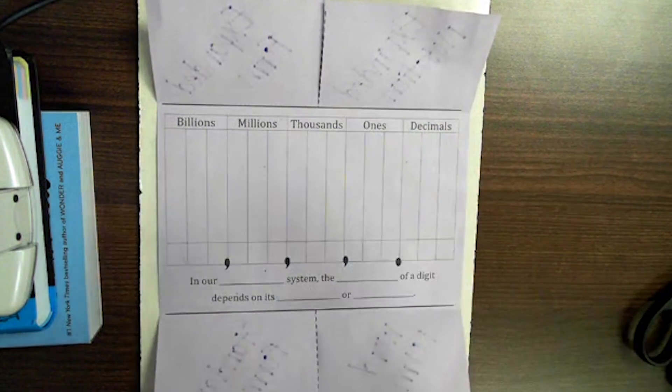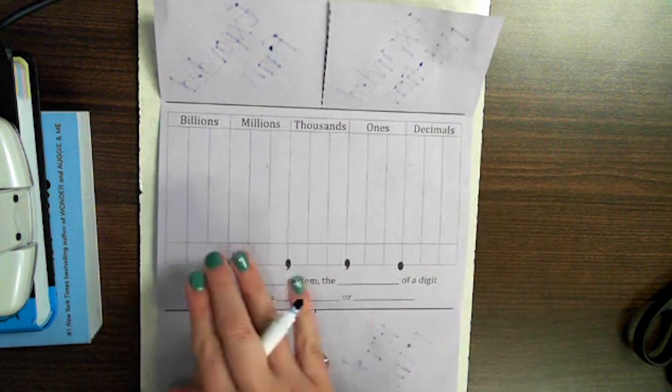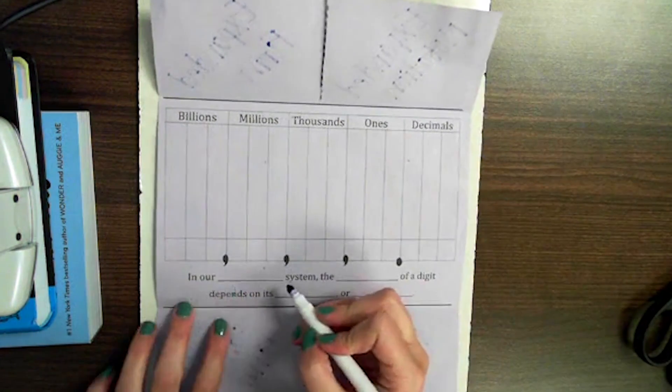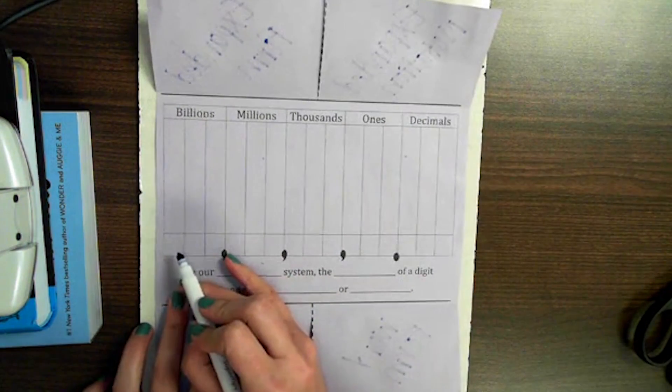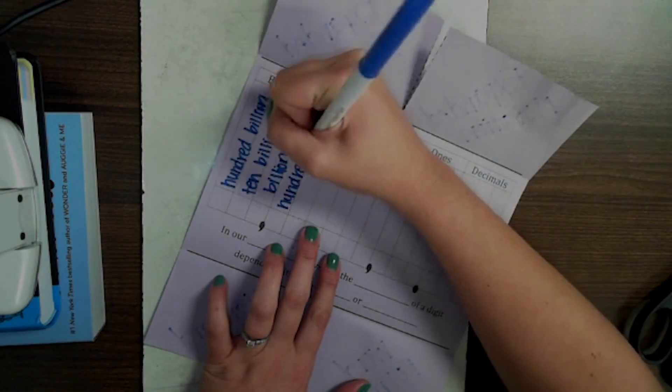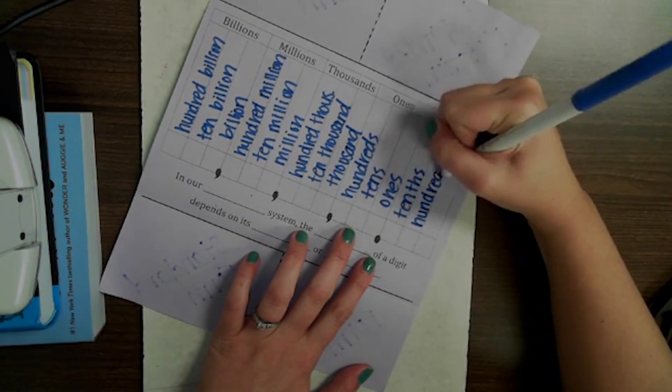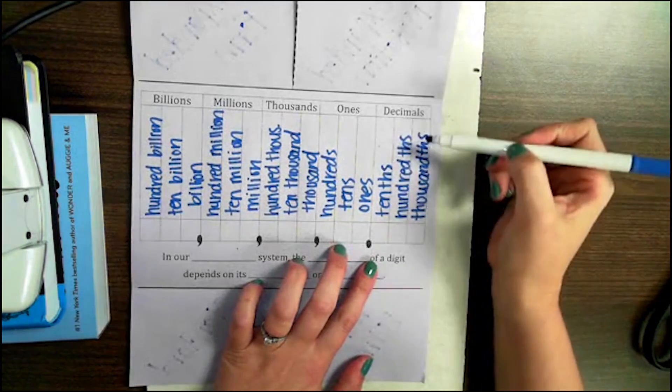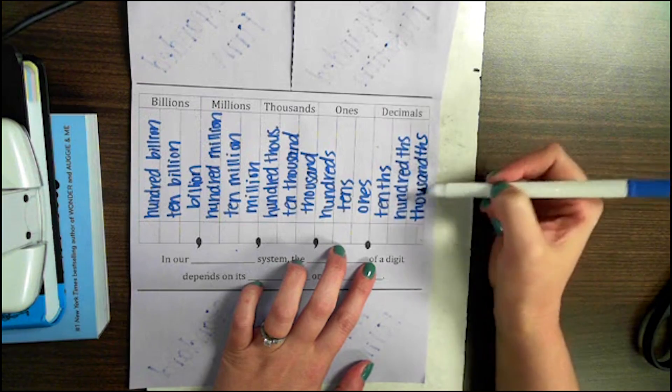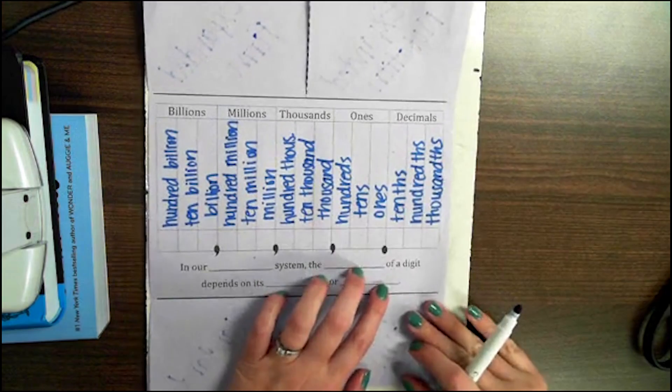On our place value chart, I want you to go ahead and fill in all of your periods and the names of each place value. You can watch me do this and then pause it and do it on your own. Remember, when you get into the decimal place value, you're going to add THS at the end of each. So tenths, hundredths, and thousandths. That's very important.